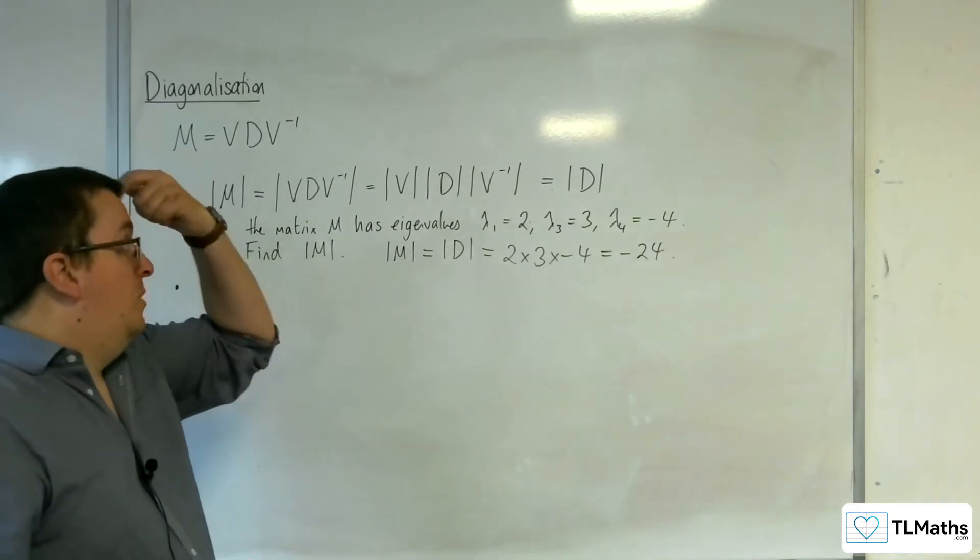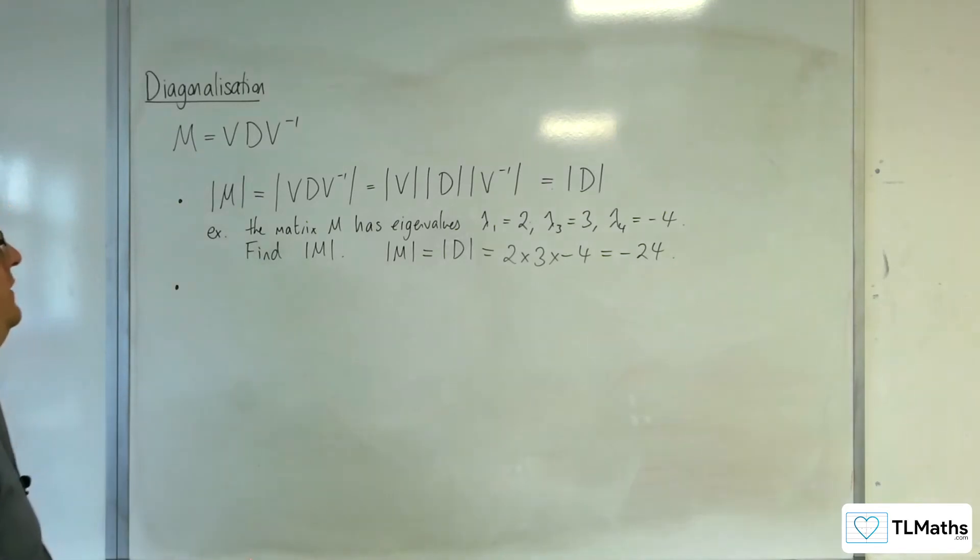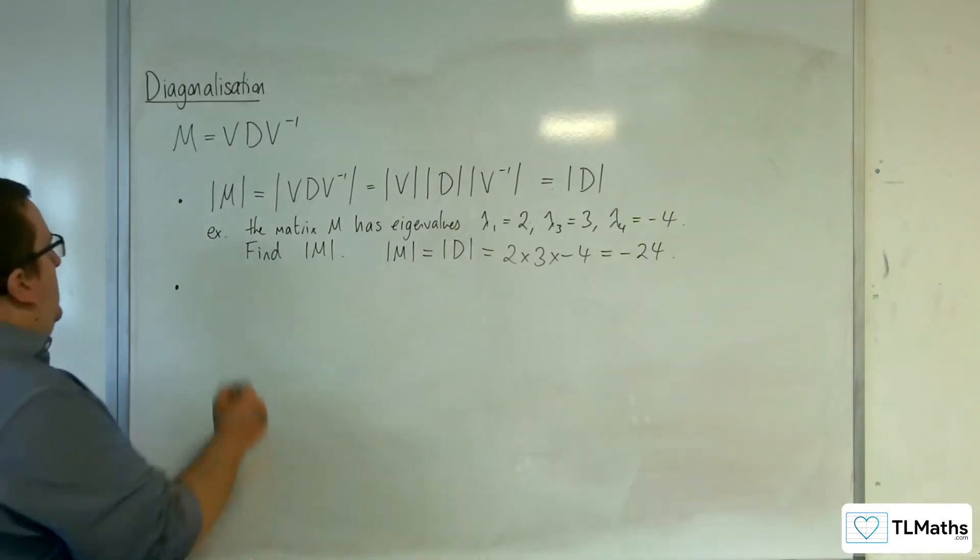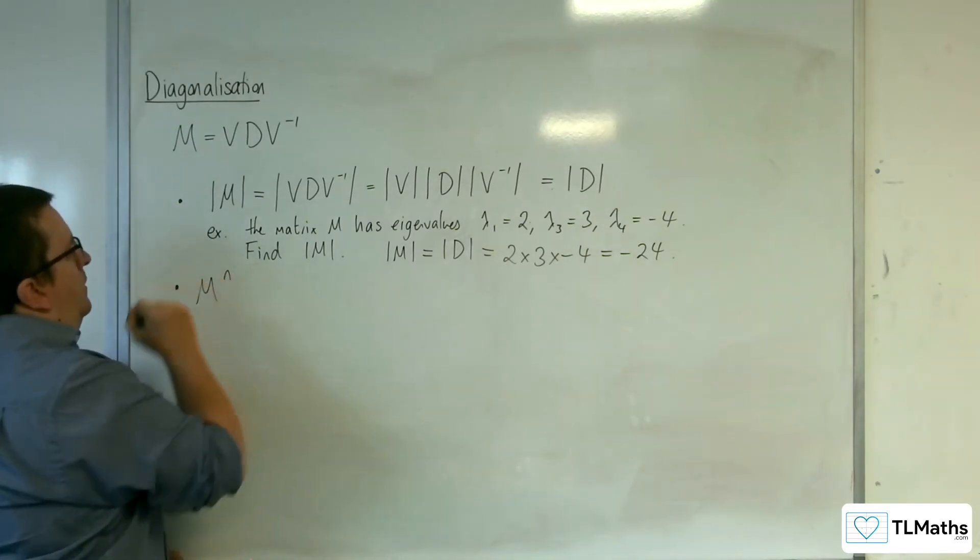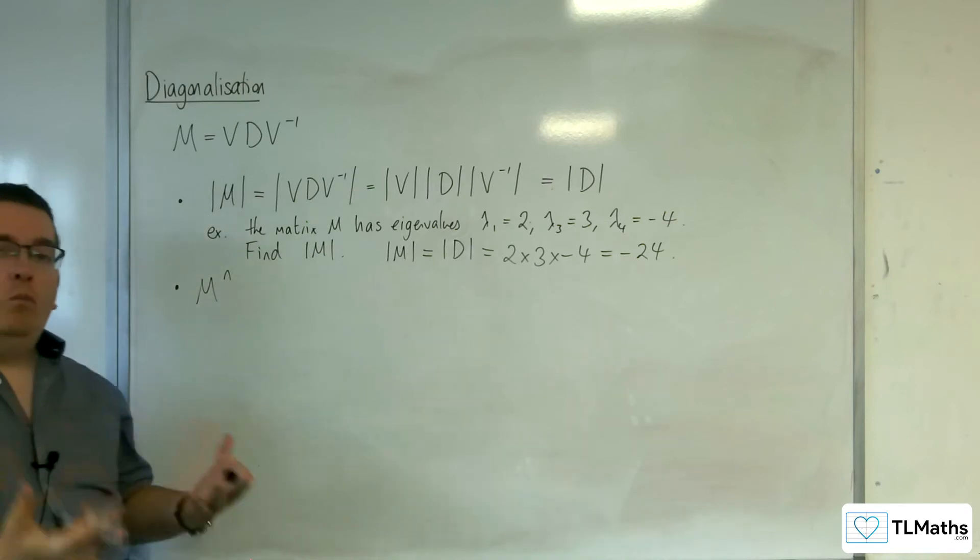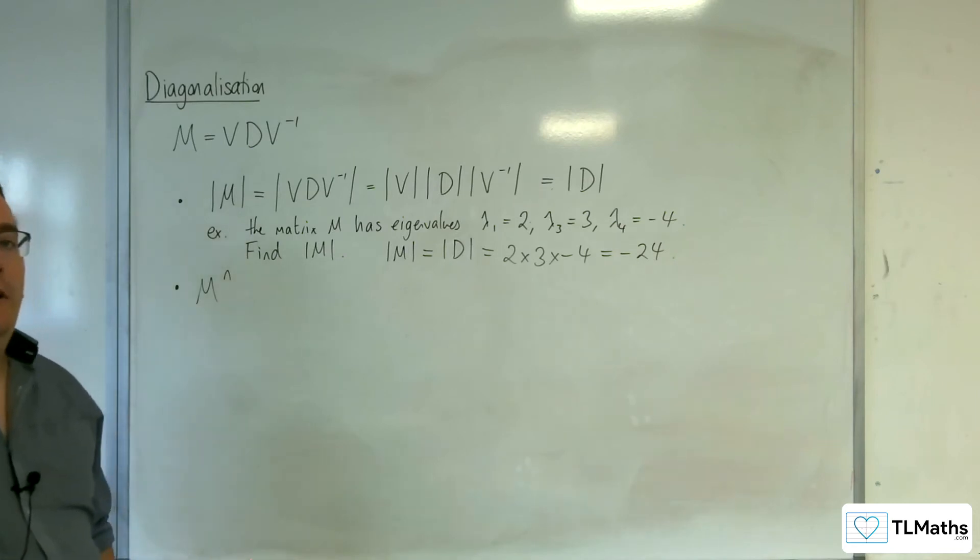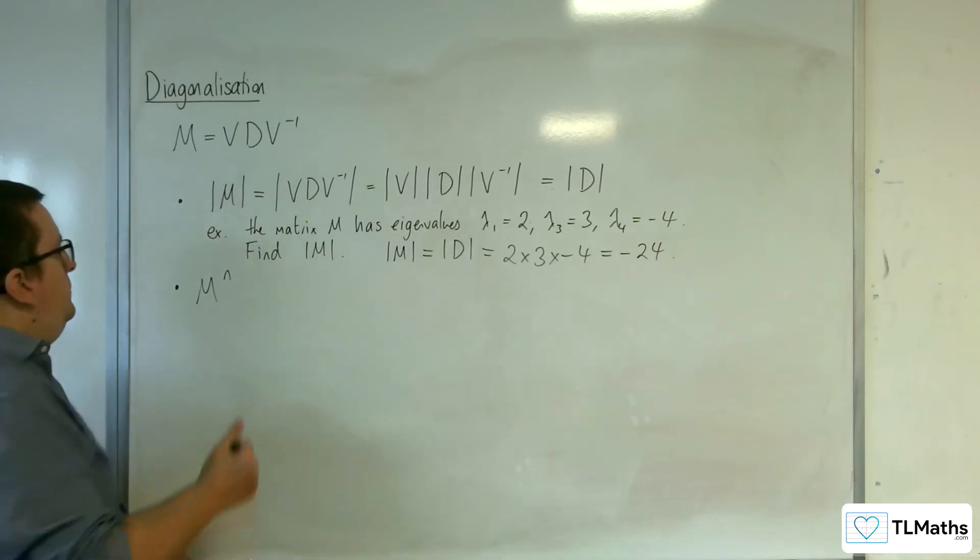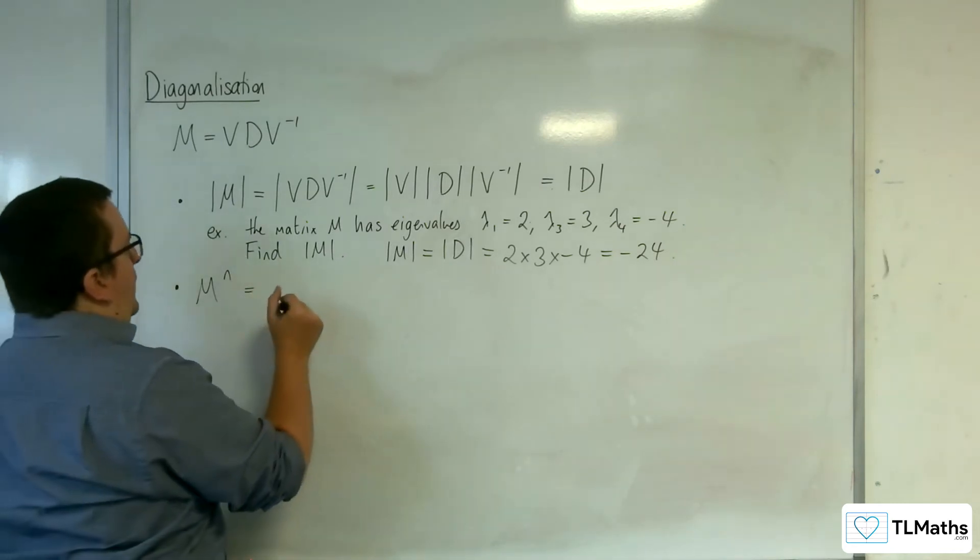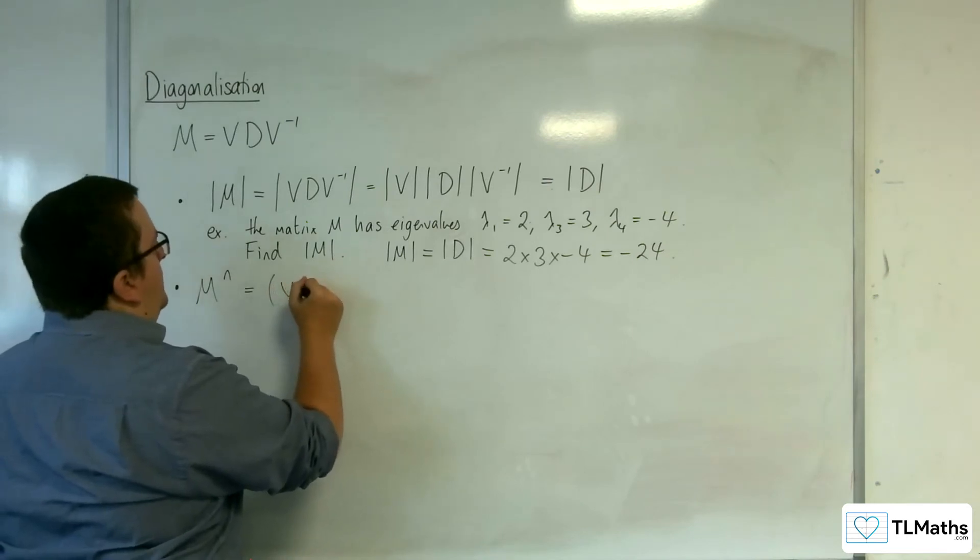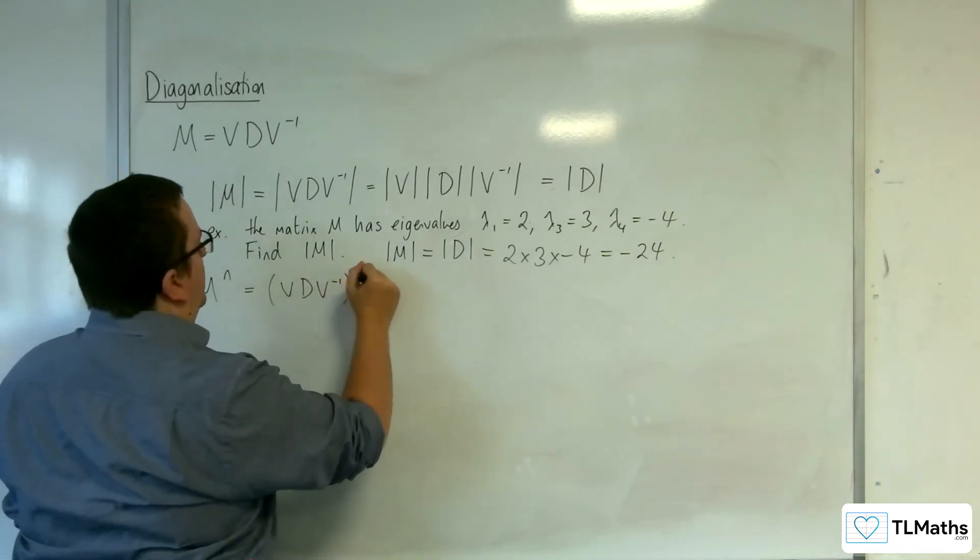The second property that we need to consider is what you get when simplified when you're looking at M to the power of N. So you're multiplying matrix M by itself N times. This is the same as looking at V D V minus 1 to the power of N.